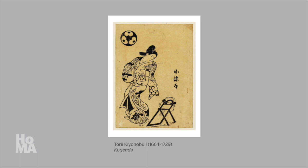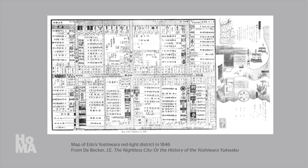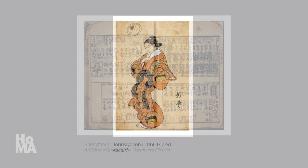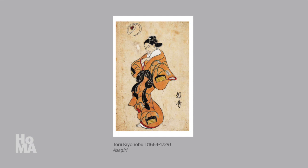When looking at a map of the Yoshiwara district, the location of these brothels are indicated by their crests. These crests can also be found in the annually published guidebooks to the Yoshiwara district. Kiyonobu depicted courtesans in sumptuous kimonos and current hairstyles. In this way, Kiyonobu's courtesans became fashion icons whose celebrity status rivaled his kabuki actors.